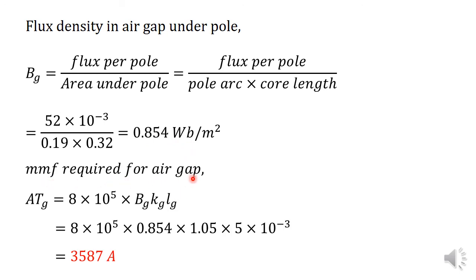The MMF required for the air gap, ATG, is given by the equation 8 × 10⁵ times BG times KG times LG. That is 8 × 10⁵ times 0.854 times 1.05 times 5 × 10⁻³, which is equal to 3587 amperes.